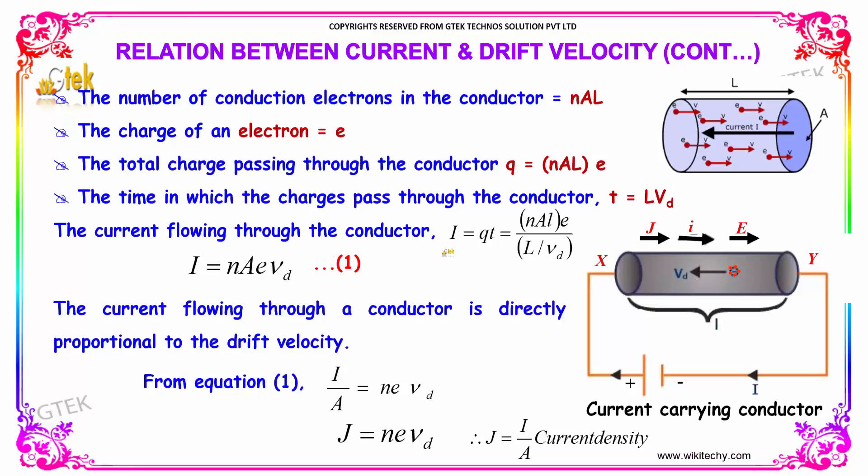The current flowing through the conductor is given by I is equal to n into A into e into drift velocity Vd.